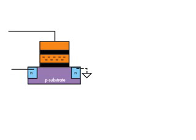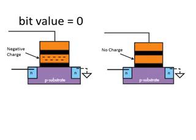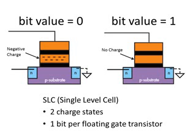One possible approach for encoding data via charge states is to have two possible charge states: one with some negative charge and one with no charge. We can let the negative charge state correspond to a bit value of 0 and the no charge state correspond to a bit value of 1. This is the approach taken by SLC, or single level cell flash memory. Since it has two charge states, it has one bit encoded per floating gate transistor.